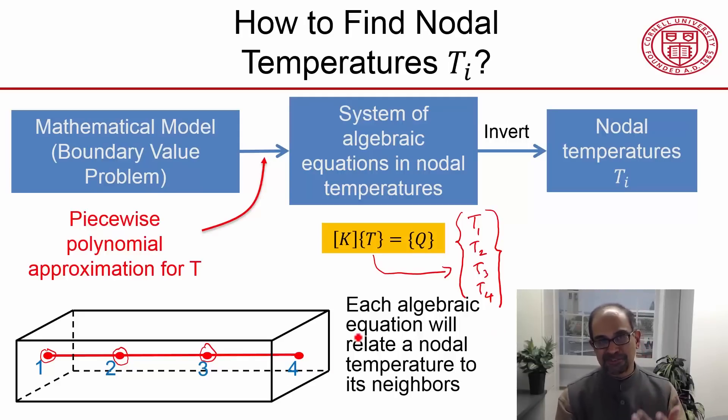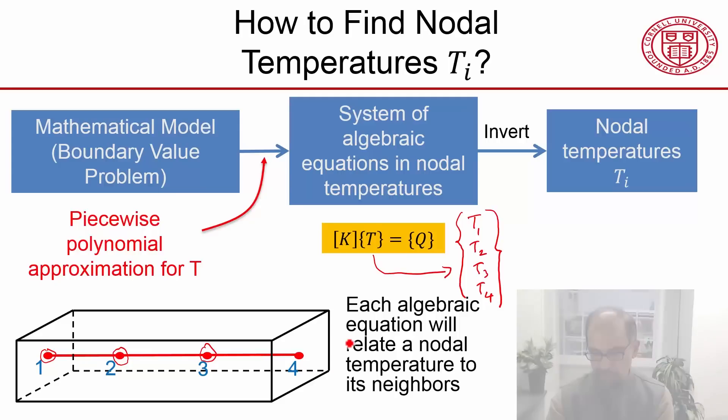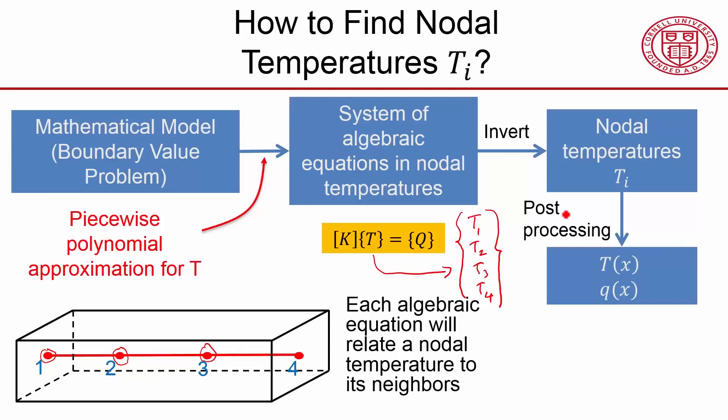That is our selected variables at selected points. And once we know the nodal temperatures, we can derive everything else from those four nodal temperatures through post-processing.